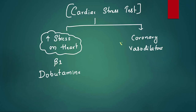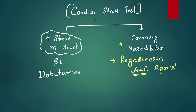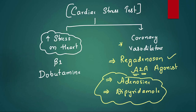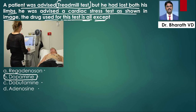We can also use a drug that dilates coronary vessels to assess blood flow. The FDA-approved drug for this is regadenoson — an adenosine A2A receptor agonist, which gives fewer adverse effects. Adenosine and dipyridamol also increase adenosine action but are not FDA-approved for this indication. All three can cause coronary steal phenomenon. The answer is dopamine — it is not used for cardiac stress testing.